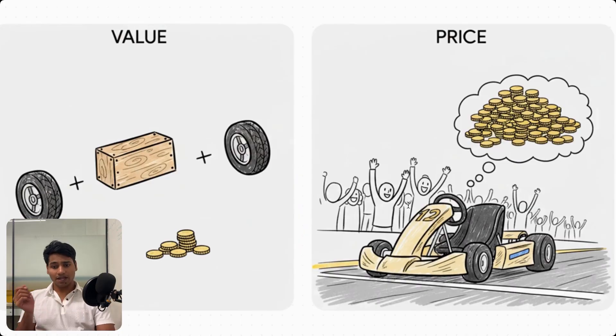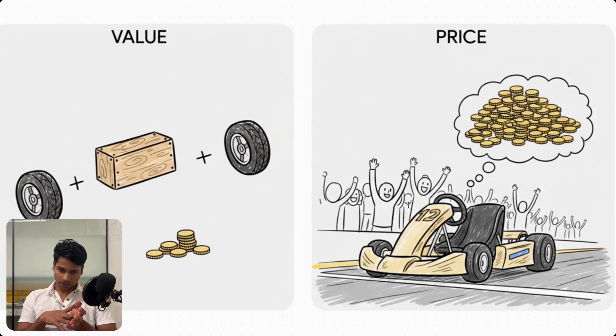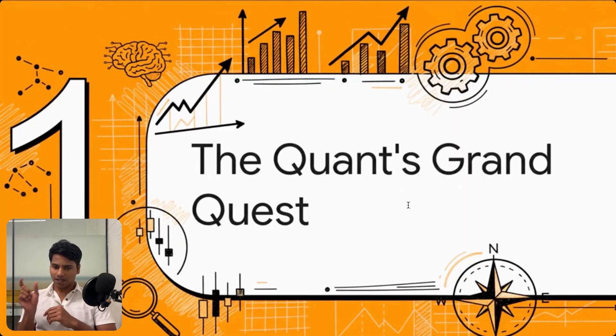But then there's its price, and that's what someone else is willing to pay for it. Maybe 80 bucks because they have this dream of winning the neighborhood race. See the difference? One is a cold hard number you can calculate. The other is all about hope, fear, and emotion. And that gap between the value and the price - that's the entire battlefield for a quant.